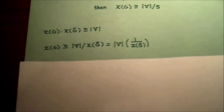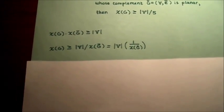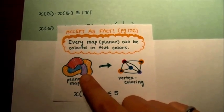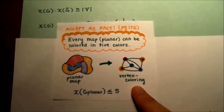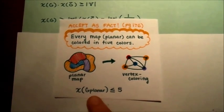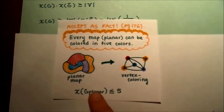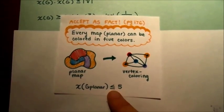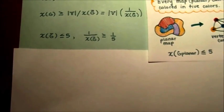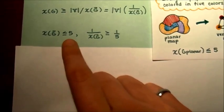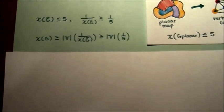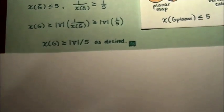We will need one more useful theorem from this chapter dealing with planar graphs. For any planar map, we can rewrite it as a vertex-colored graph G, and we know we can vertex-color this graph in at most five colors. So if G complement is planar, then χ(G complement) is less than or equal to five, or more importantly, one over χ(G complement) is greater than one-fifth. Substituting that into our original relation yields exactly what we're trying to show.